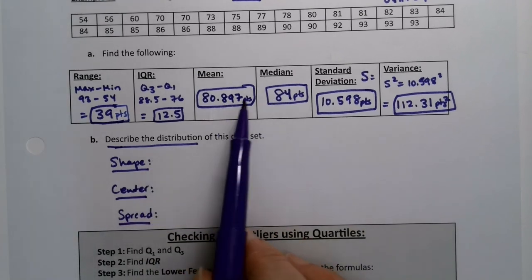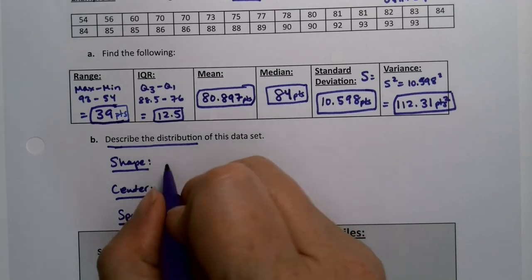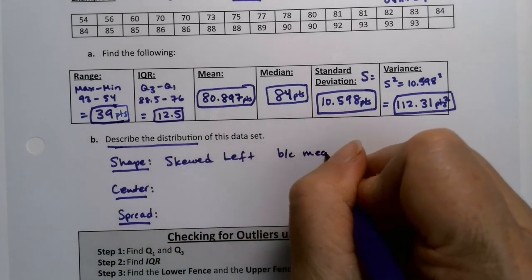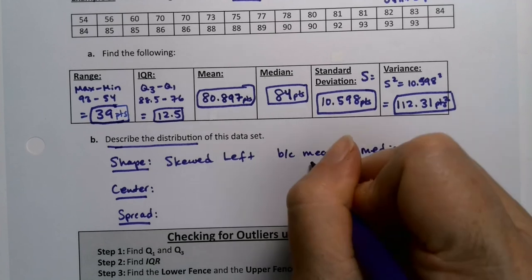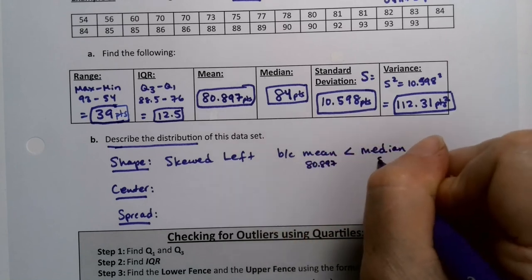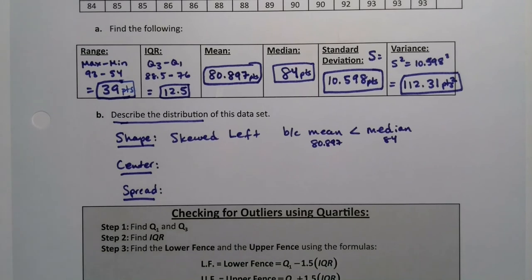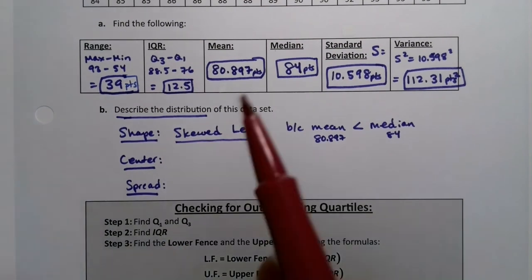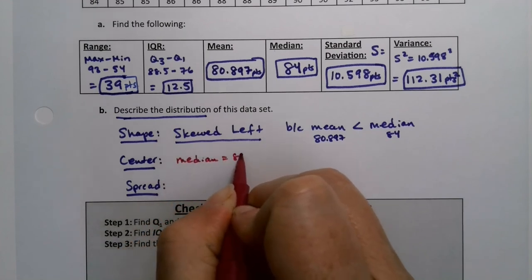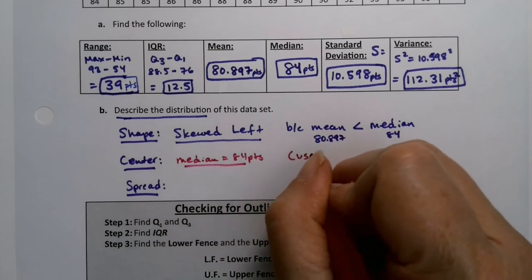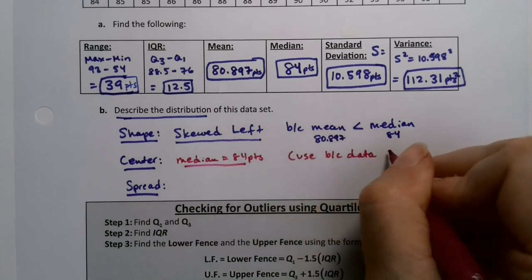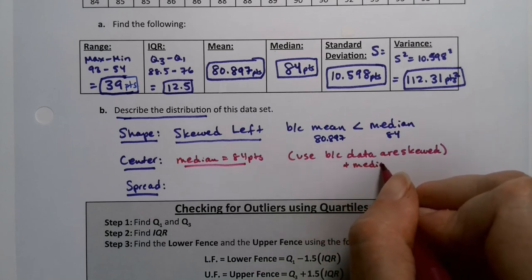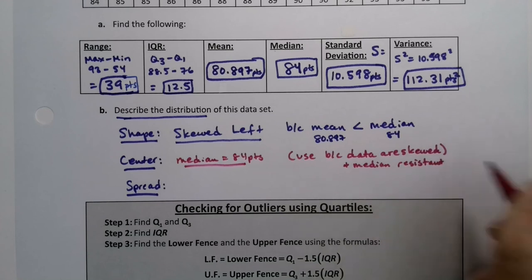Let's look at the mean and the median. The mean is significantly less than the median. So we can say that this is skewed left because the mean is less than the median. This was 80.897 and this was 84. Now, back in section 3.1, we learned that when your data set's skewed, you're better off with your median. So the median, which is 84 points, you would use because it's skewed.